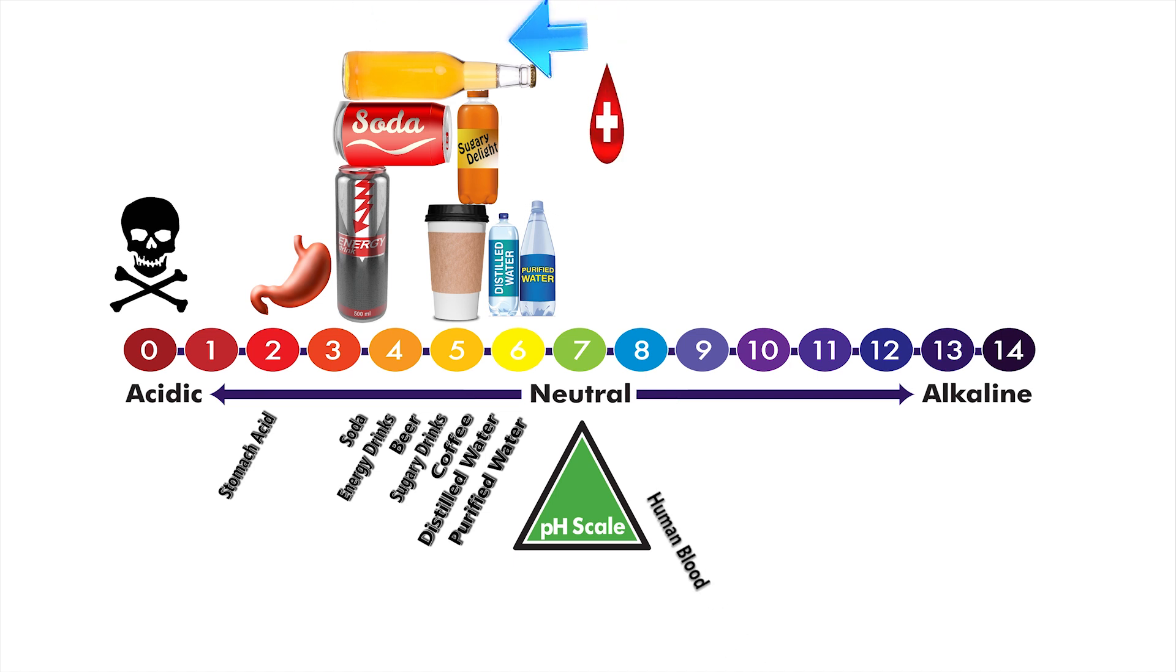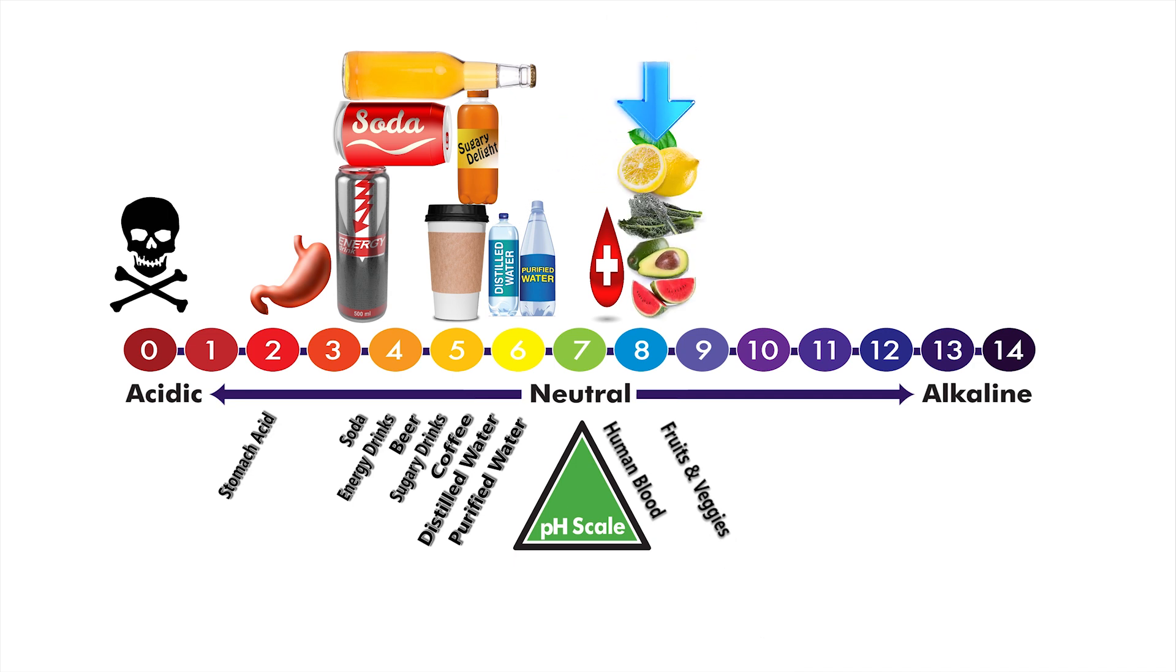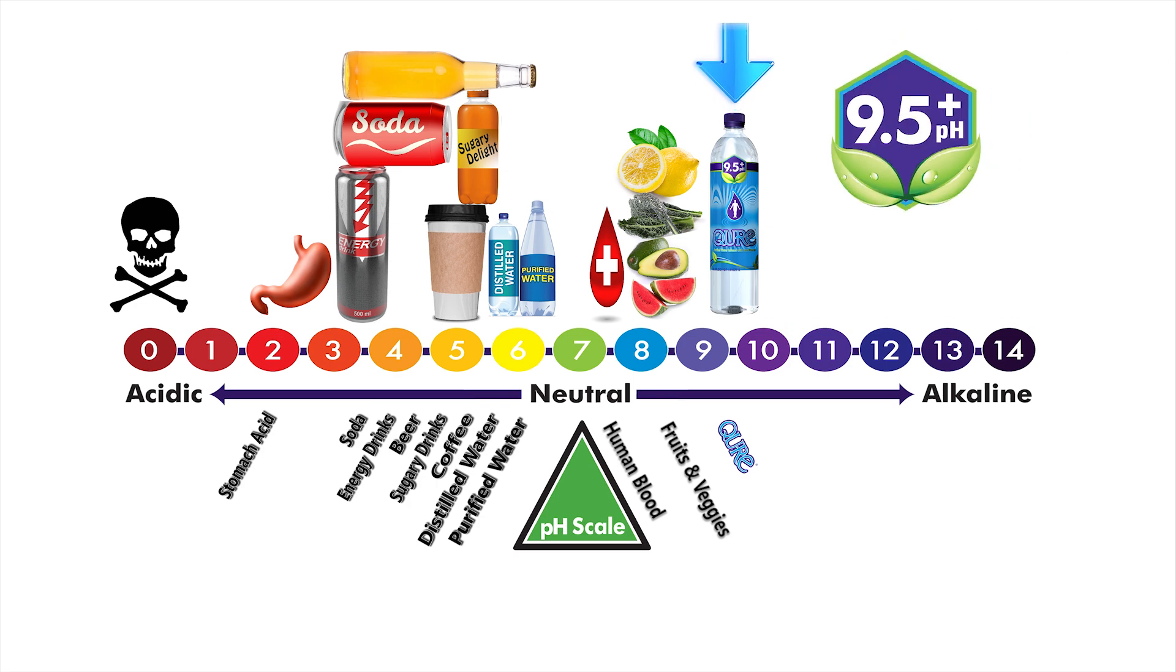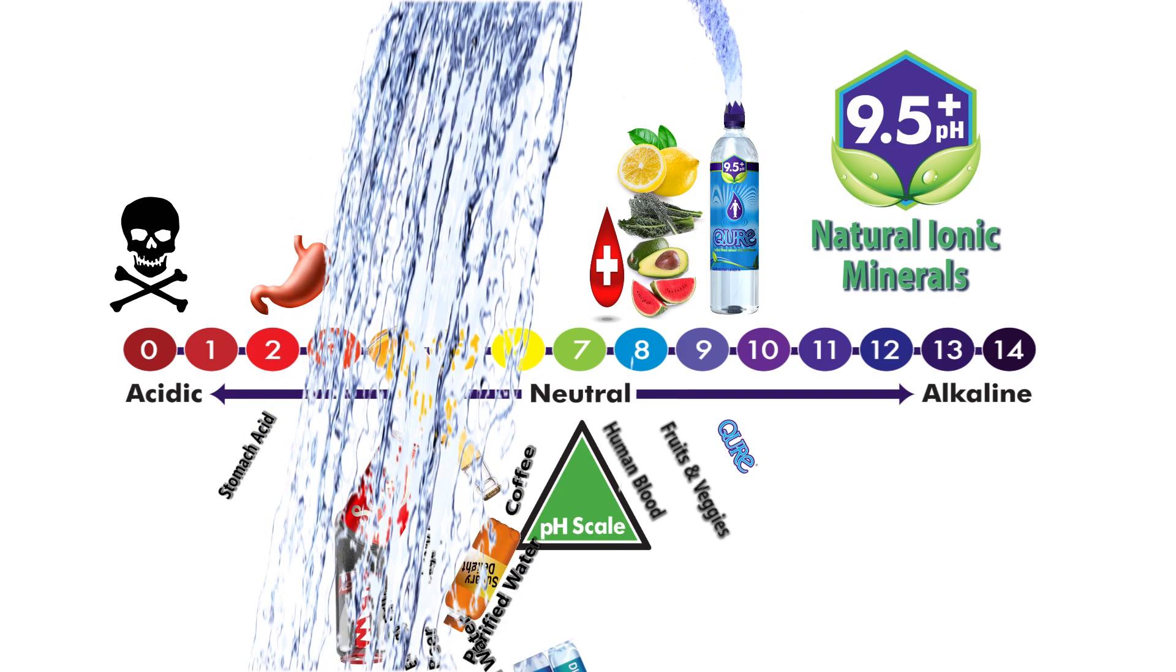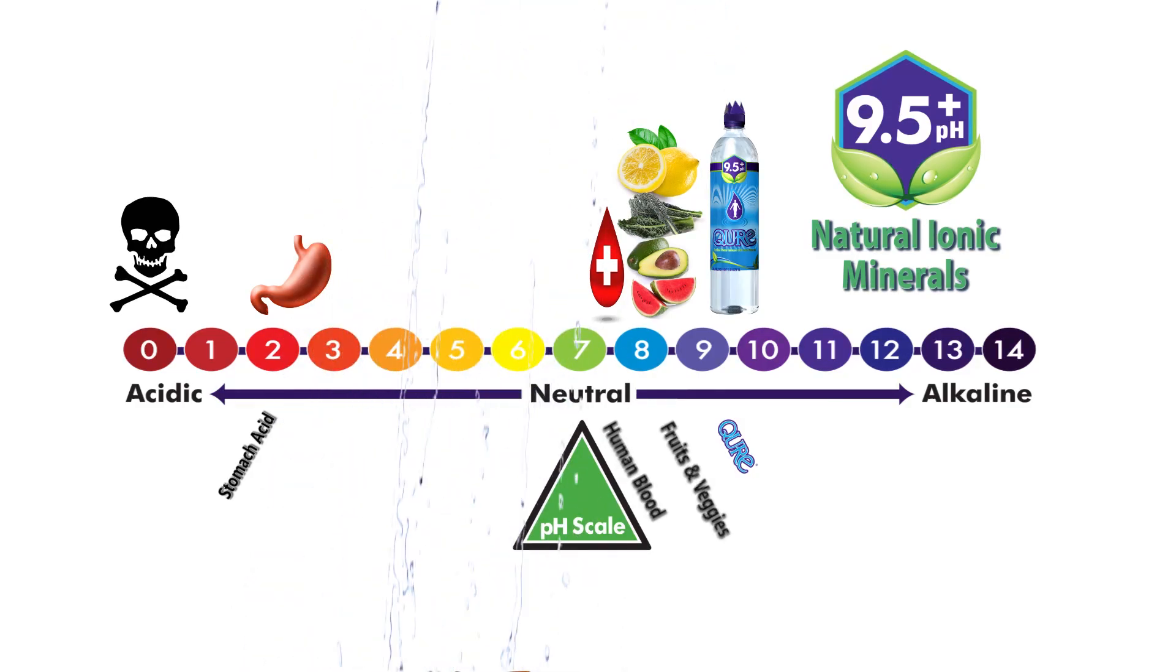On the other side of the scale, human blood is maintained at a slightly alkaline pH of 7.4. Many fruits and vegetables are alkaline forming and can fall between 7.5 to 9. CURE Water ranks at a stable 9.5-plus pH made with natural ionic alkaline minerals. CURE's 9.5-plus is the ideal pH made to neutralize and counterbalance acids, making it the perfect hydration choice to complement a balanced lifestyle.